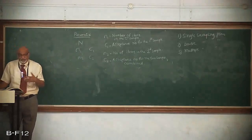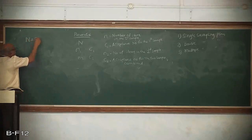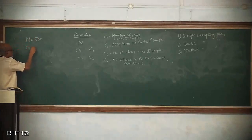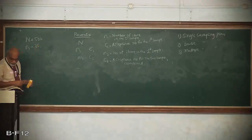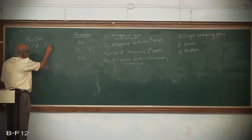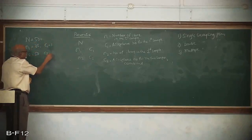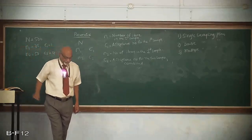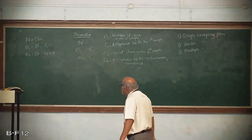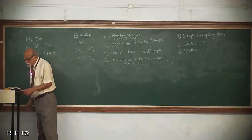Let us take an example: N is equal to 500, N1 is equal to 35, C1 is equal to 1, N2 is equal to 50, and C2 is equal to 4. That means out of a lot of 500, take the first sample of 35.